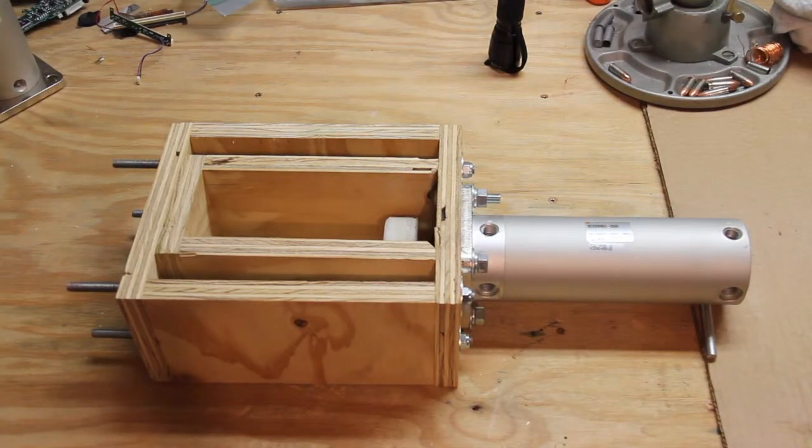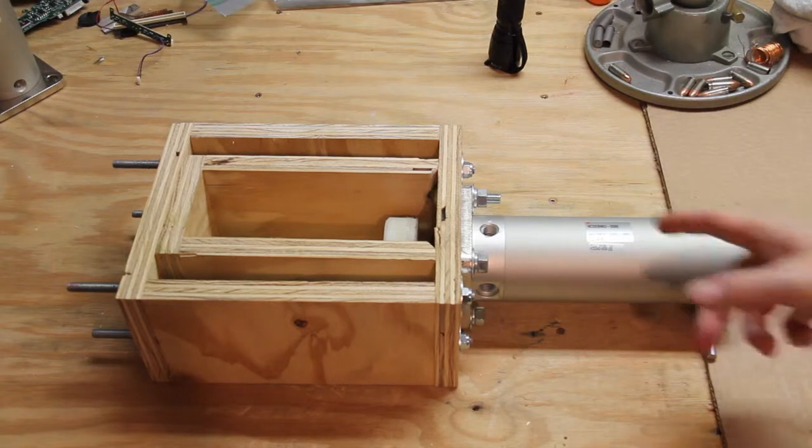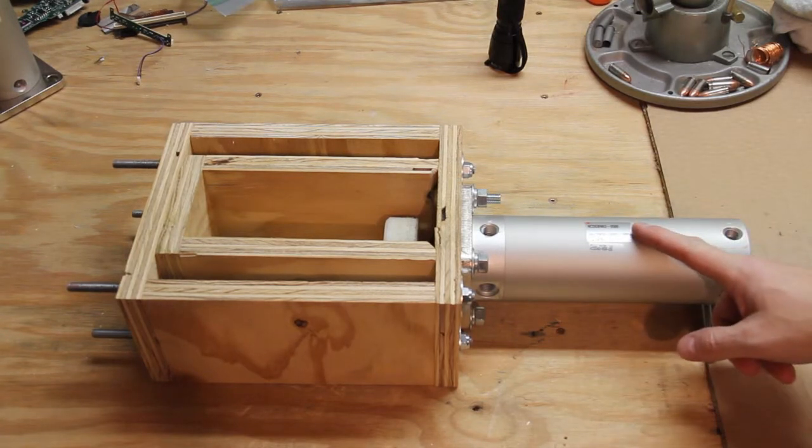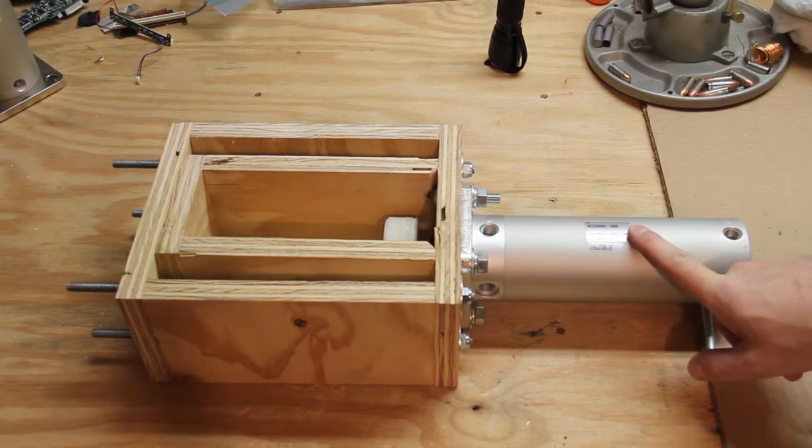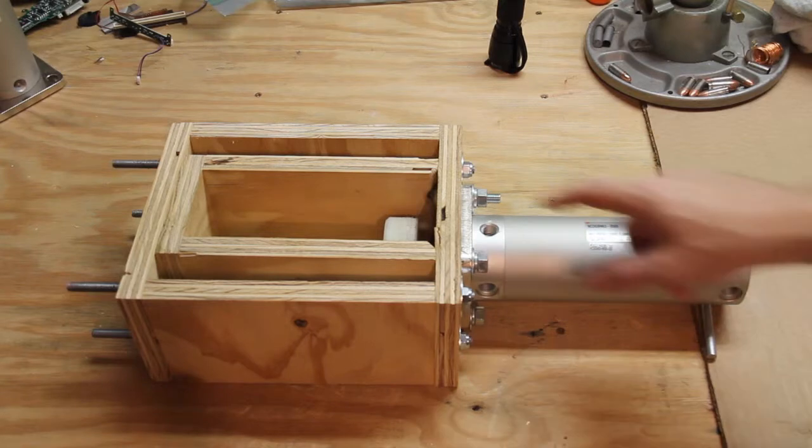This is a little project I've always wanted to build. This is a pneumatic can crusher using a 63 millimeter bore, 5 inch stroke pneumatic cylinder that at 100 psi will put about 490 pounds of pressure on the ram here.